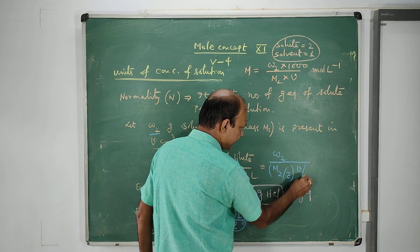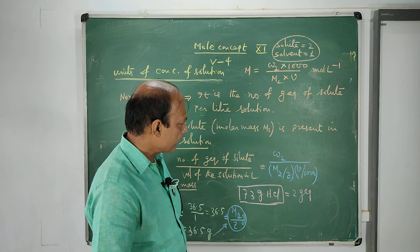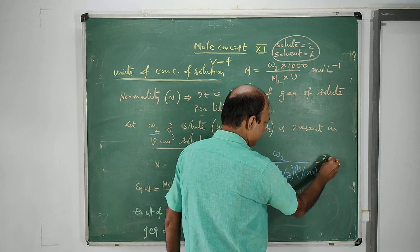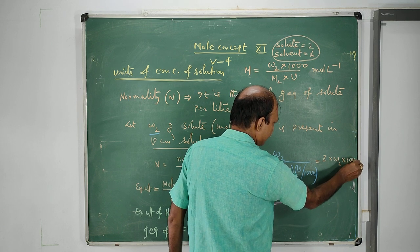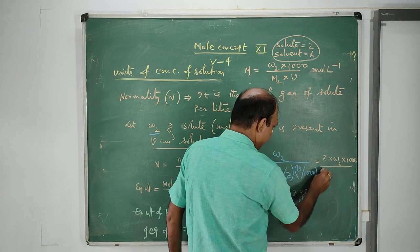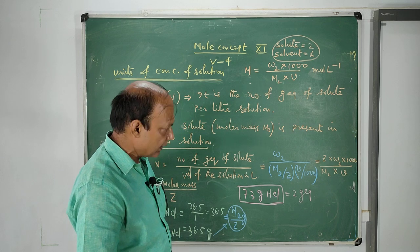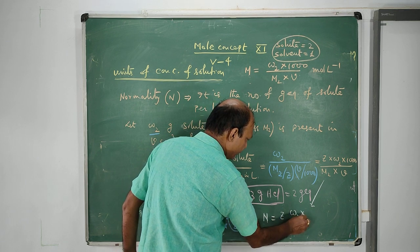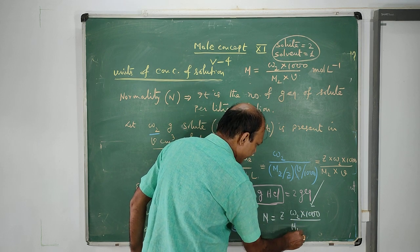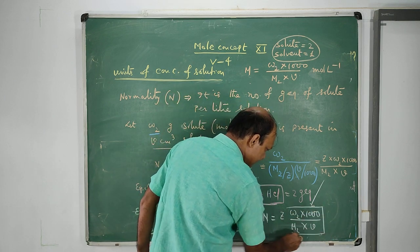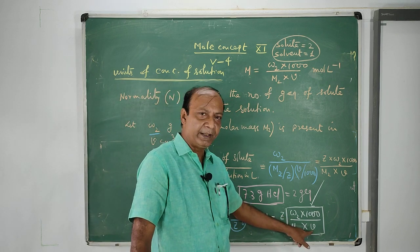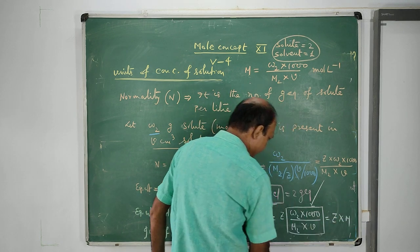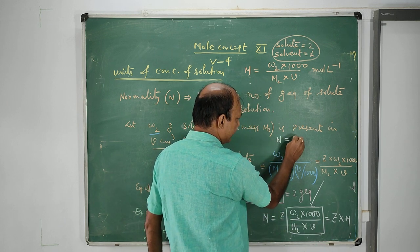Simplifying, normality equals Z into W2 into 1000 by M2 into V. Since W2 into 1000 by M2 into V stands for molarity, normality equals Z into molarity, i.e., N = Z × M. This is a very useful short formula to convert molarity to normality. For example, 0.1 molarity H₂SO₄ equals 0.2 normality H₂SO₄, because Z factor of H₂SO₄ is 2, so 2 into 0.1 equals 0.2 normal.